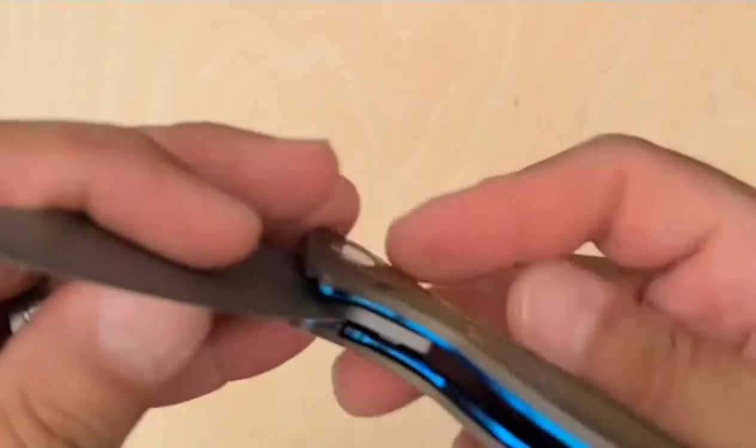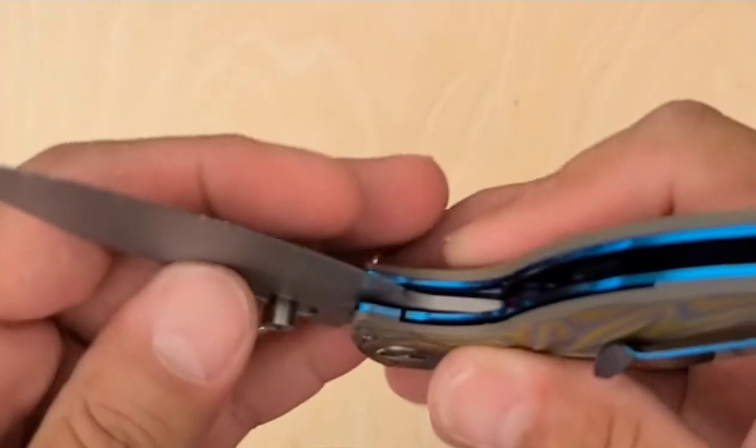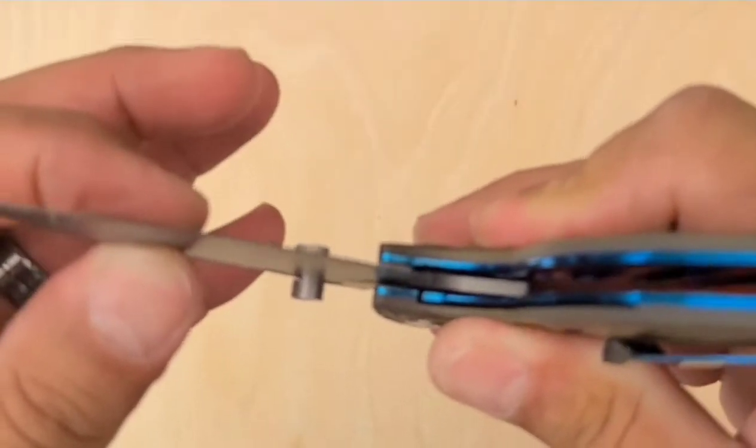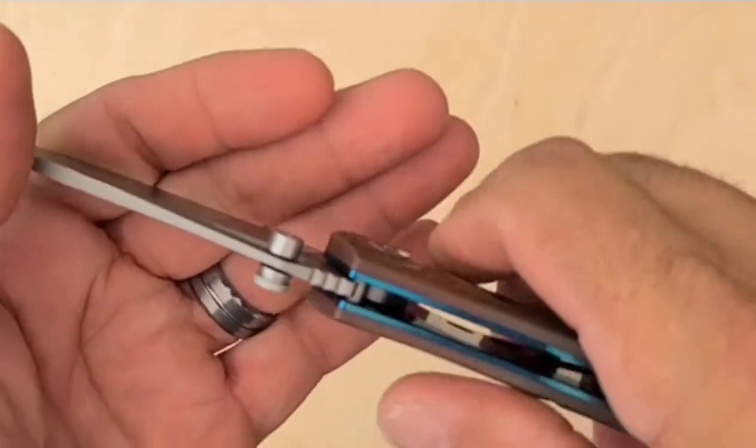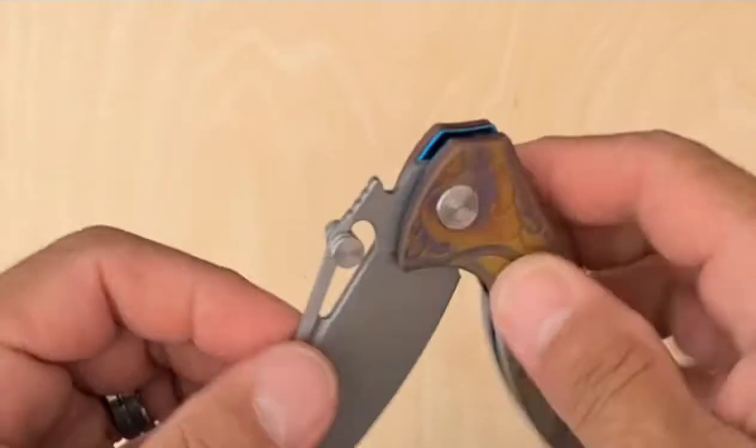Sometimes you need to have it open a little bit or halfway closed to be able to feel it, because when it locks up, sometimes that looseness goes away. But this sucker is a little loose.